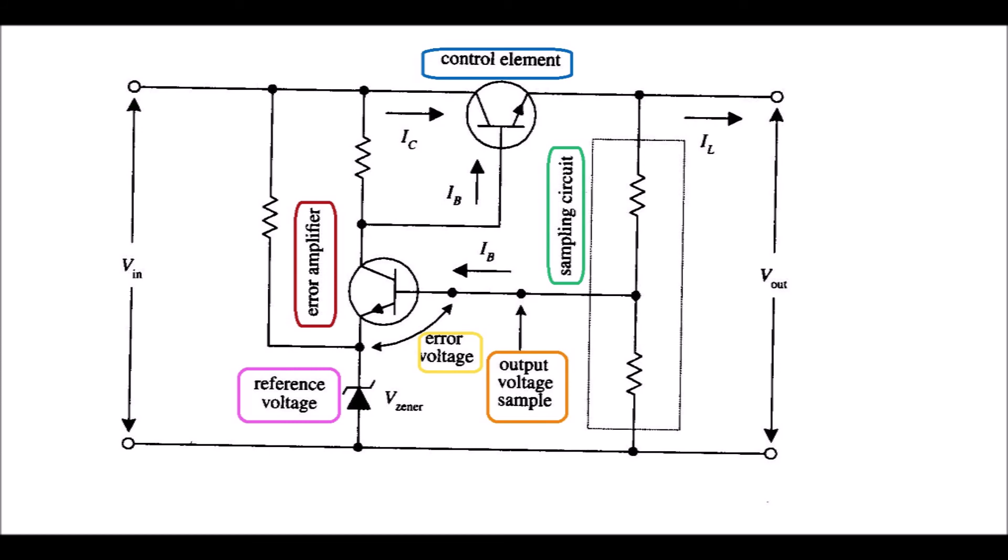A simple regulator consists of a sampling circuit, an error amplifier, a conduction element, and a voltage reference element.